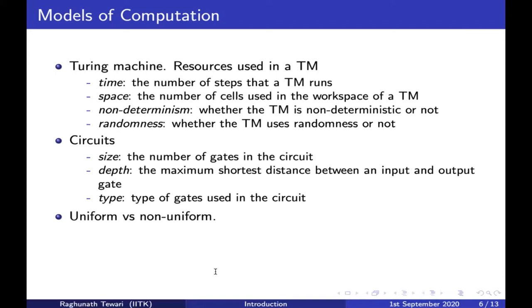For example, when you write an algorithm to sort an array of numbers, you don't write separate algorithms for arrays of separate sizes — you write one algorithm that works on all array sizes. That is what is called a uniform model. For a Turing machine, if you have a Turing machine that solves a particular problem, the same Turing machine works on all input lengths.